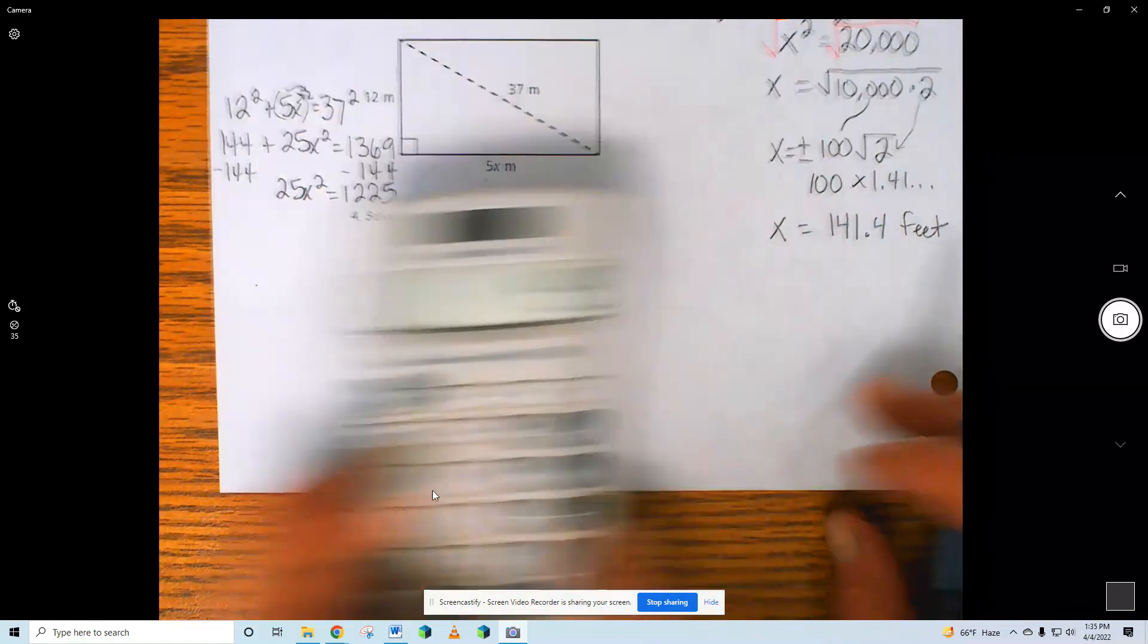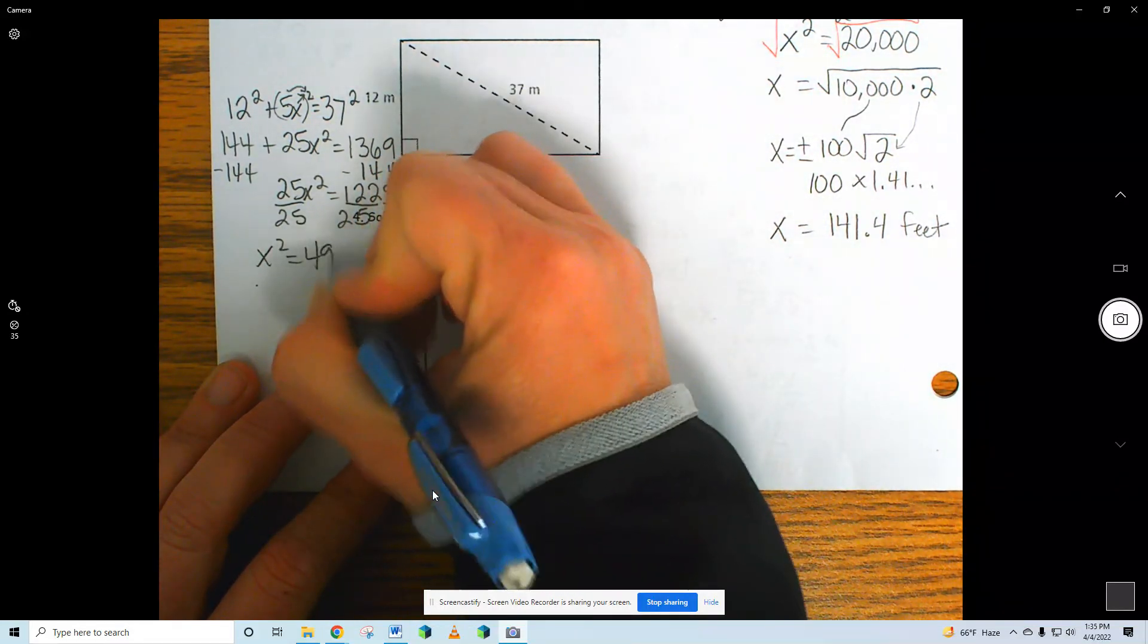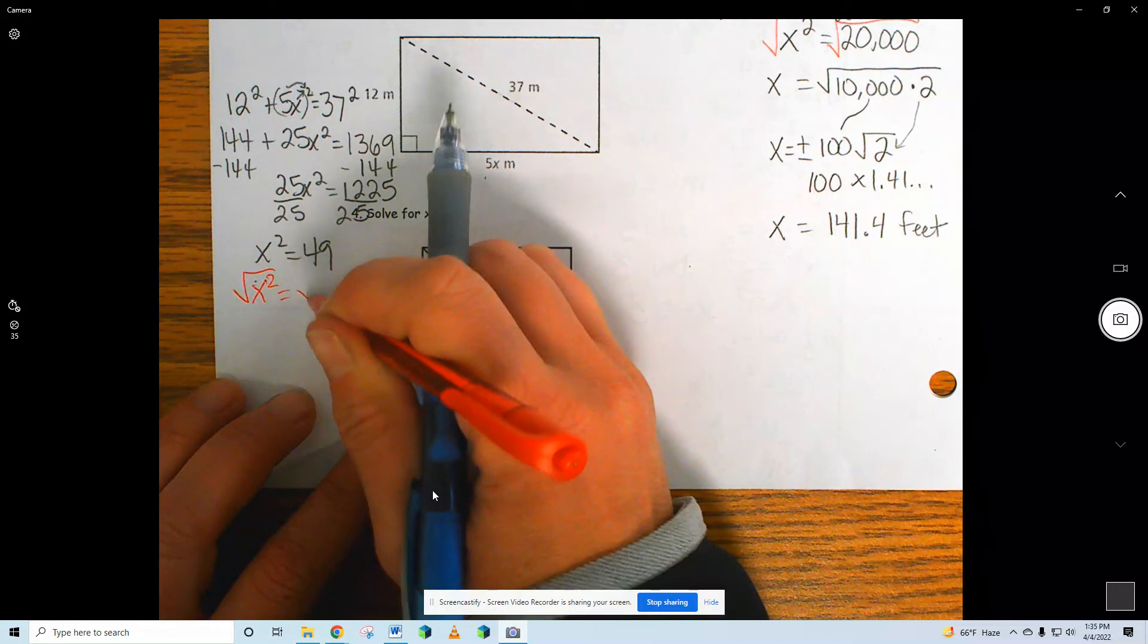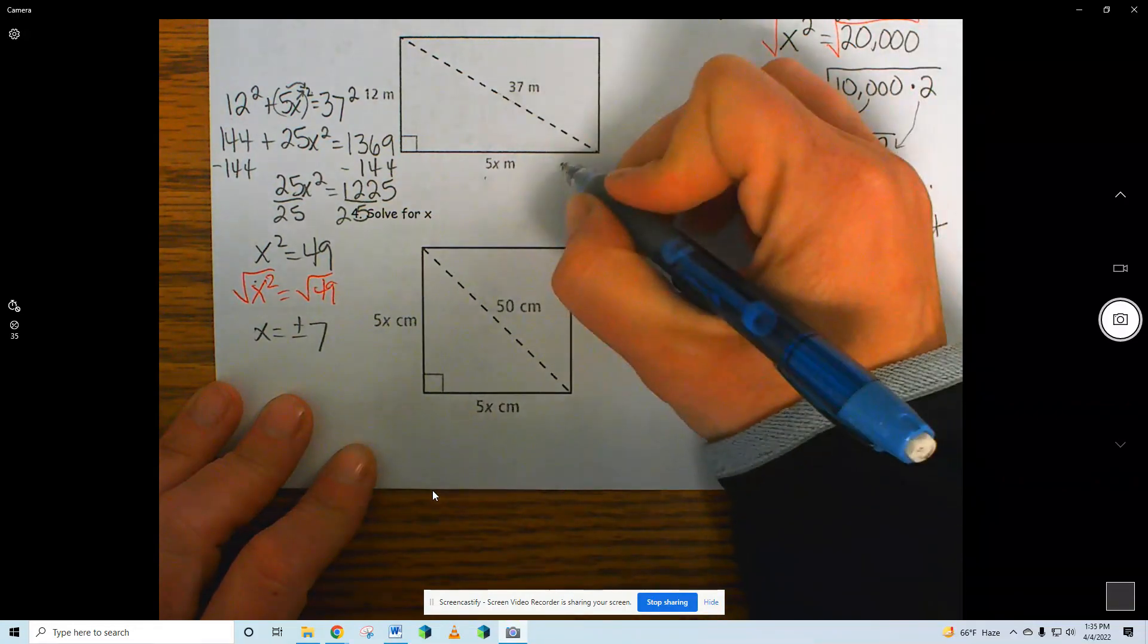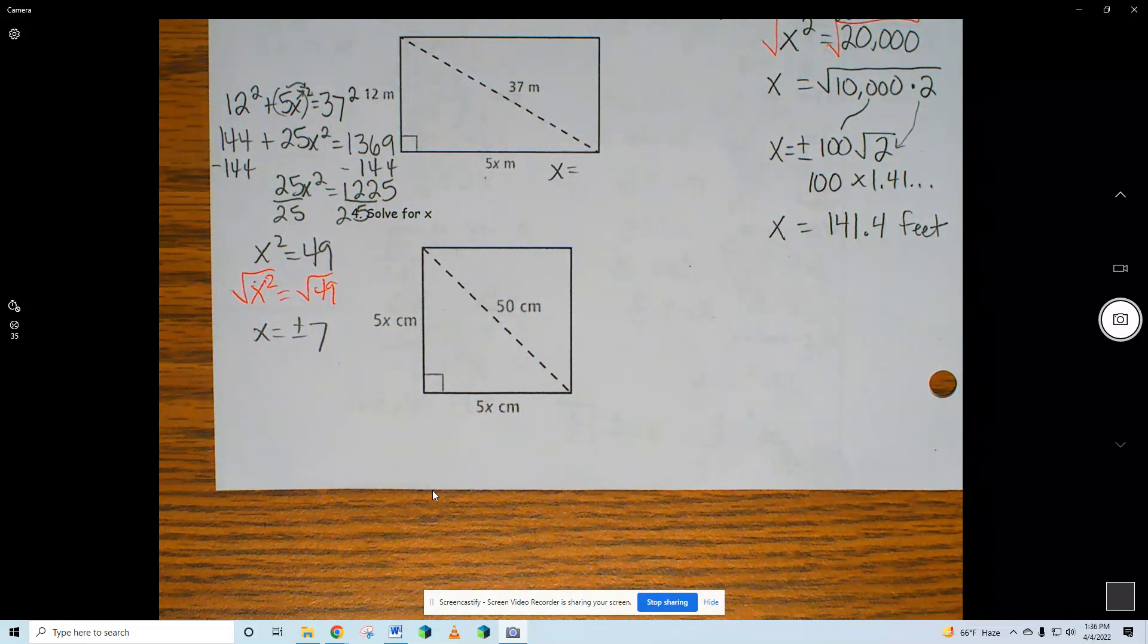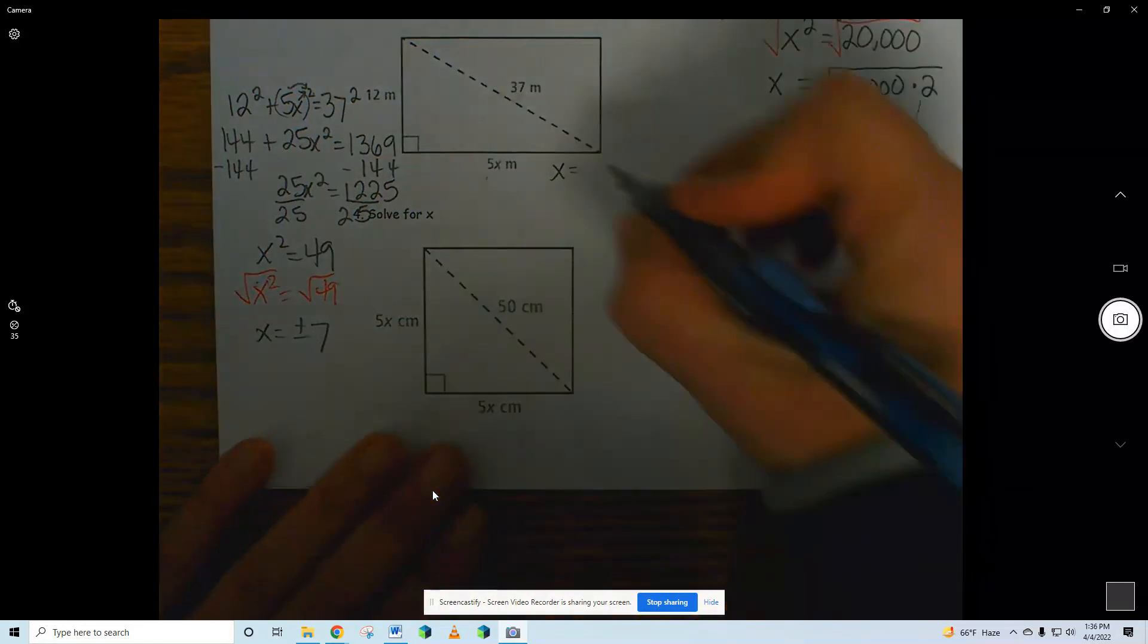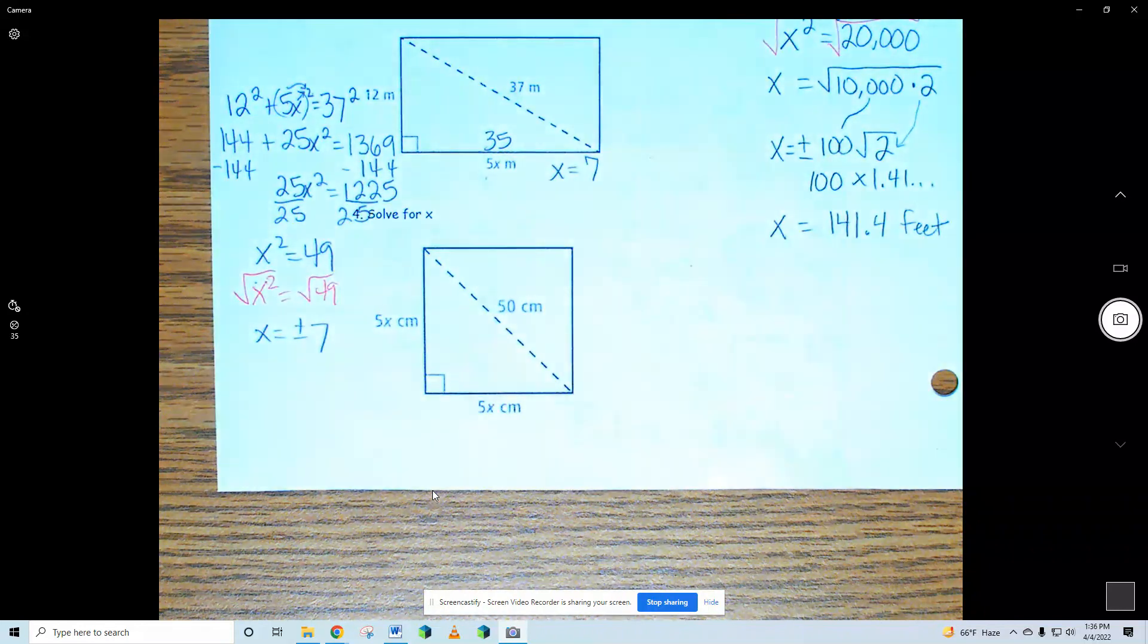x would equal, and again, if I plugged in positive 7 for 5x, I would get 35. I don't want the side of my rectangle to be negative 35, so I cannot use my negative. So x is just positive 7. So this is 35 long. 5 times 7.